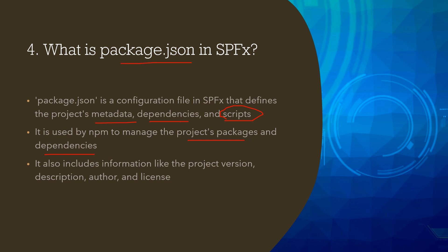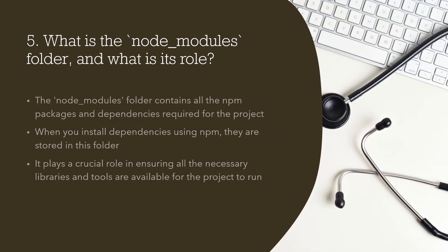The package.json file also includes the project's version — 1.0 is the default — a description about the project, the web part or whatever we are creating, who the author is, and how a license is applied.